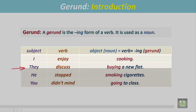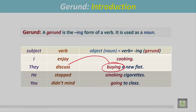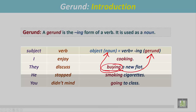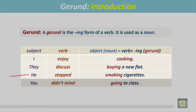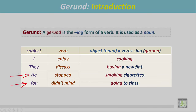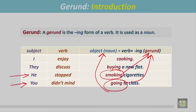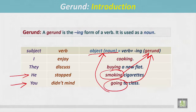The second sentence: they discussed what? 'Buying a flat.' This -ing form of the verb is the object for this verb. An object acts like a noun, so this -ing form is a gerund. Similarly, 'he stopped smoking cigarettes' and 'you didn't mind going to class.' All these -ing forms of the verb are gerunds, since they are acting like objects — I mean, nouns.